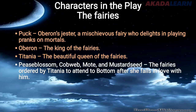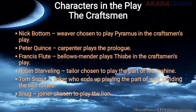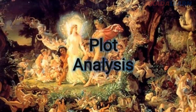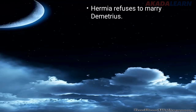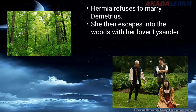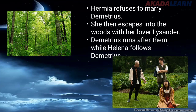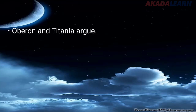So we have the fairies, the human lovers, the Athenians, and the craftsmen. Now let's go to the plot analysis. In the beginning, Hermia refuses to marry Demetrius — her father Egeus had betrothed her to Demetrius, but she refuses. Because of that, she escapes into the woods with her lover Lysander. Demetrius runs after them, while Helena follows Demetrius because she is in love with him.